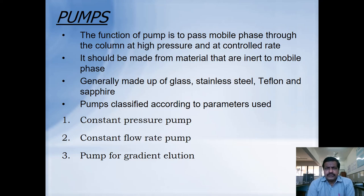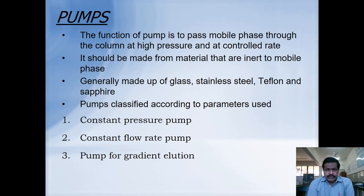The next component is the pump. The main function of the pump is to pass the mobile phase through the column at high pressure and at a controlled rate. It should be made from materials that are inert to the mobile phase, generally glass, stainless steel, teflon, or sapphire. These pumps can be classified into three types: constant pressure pump, constant flow rate pump, and pump for gradient elution.